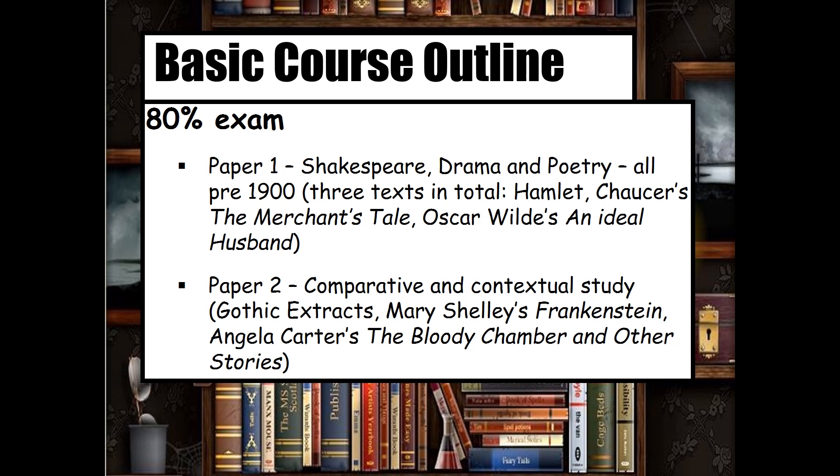A Level English Literature is assessed by 80% exam and 20% coursework. The content of the exam papers is outlined here for you and includes the set texts that you will study. As you will see, there is a range of poetry, plays and prose. There are writers who will be familiar to you from your GCSE studies, such as Shakespeare, but also earlier writers, such as Chaucer, and more modern texts, such as The Bloody Chamber and other stories.